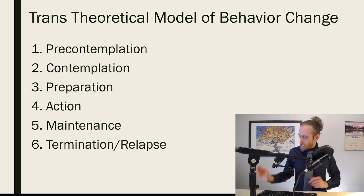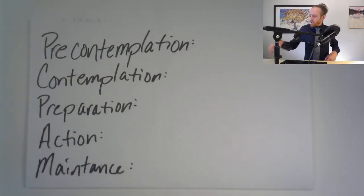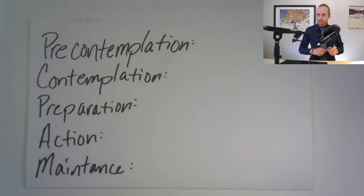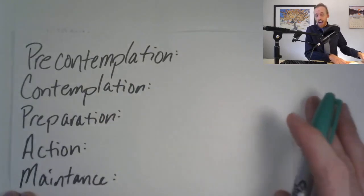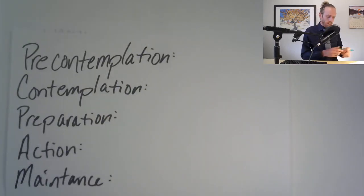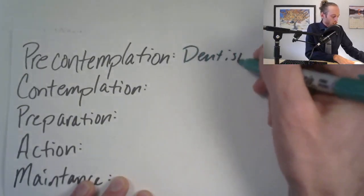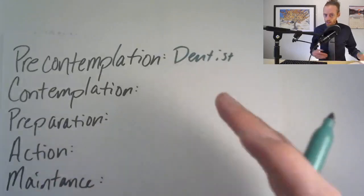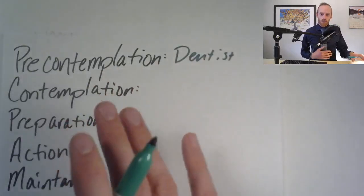Now for what you're going to do for your assignment along with this video, you're going to think about these stages and think of some behaviors that you have that match these stages. For me, for precontemplation, I couldn't think of anything at the moment that I'm six months out from, so I picked a past example. I used to not realize I had to go to the dentist for teeth cleanings or I didn't floss. Back when I was in college that was definitely a precontemplation phase.